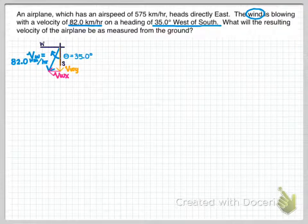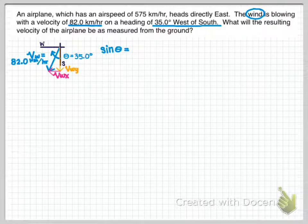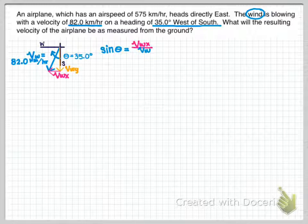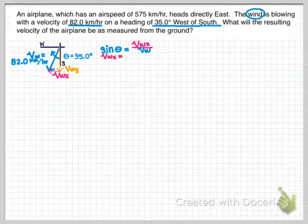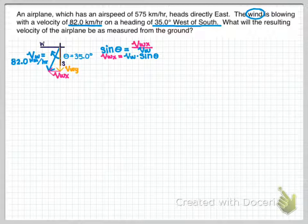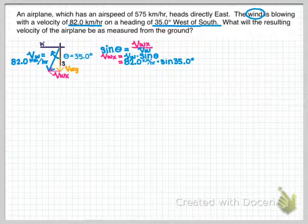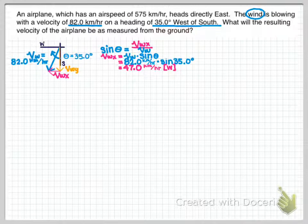Now I'll use SOH-CAH-TOA to solve this. Starting with the sine identity: sine of theta equals opposite over hypotenuse. Here theta is 35 degrees, the opposite is the velocity of the wind in the x-direction, and the hypotenuse is the velocity of the wind. Solving for VWX: VWX equals VW times sine theta. Plugging in — VW is 82 kilometers an hour and theta is 35 degrees. Make sure your calculator is in degree mode. That gives you 47 kilometers an hour to the west.